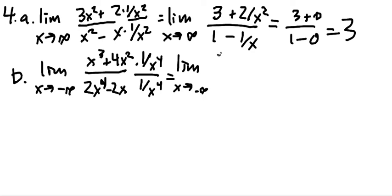This gives us up top one over x plus four over x squared. And on the bottom, it leaves us with two minus two over x cubed.